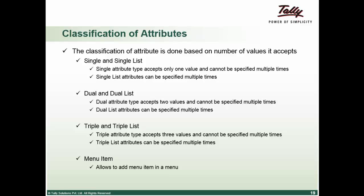Single and single list. A single type attribute accepts only one value and can't be specified multiple times. The attributes such as width and style are of single type.